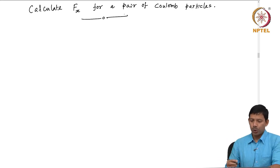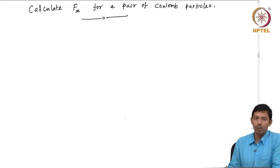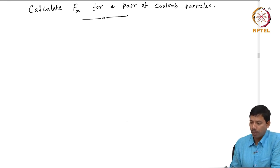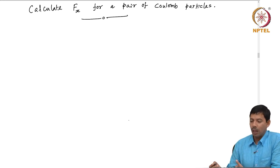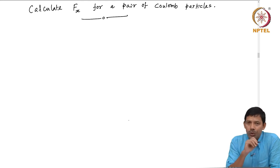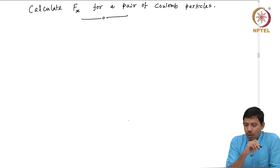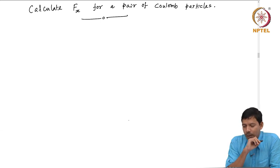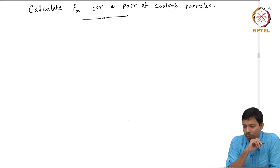Welcome back. The question was: calculate the x-component of force between a pair of Coulomb particles. What do I mean by Coulomb particles? Basically, the particles are charged, and when the particles are charged you calculate their potential using Coulomb's law. The particles whose potential can be calculated using Coulomb's law I call Coulomb particles. So, what would be the force between two such charged particles?